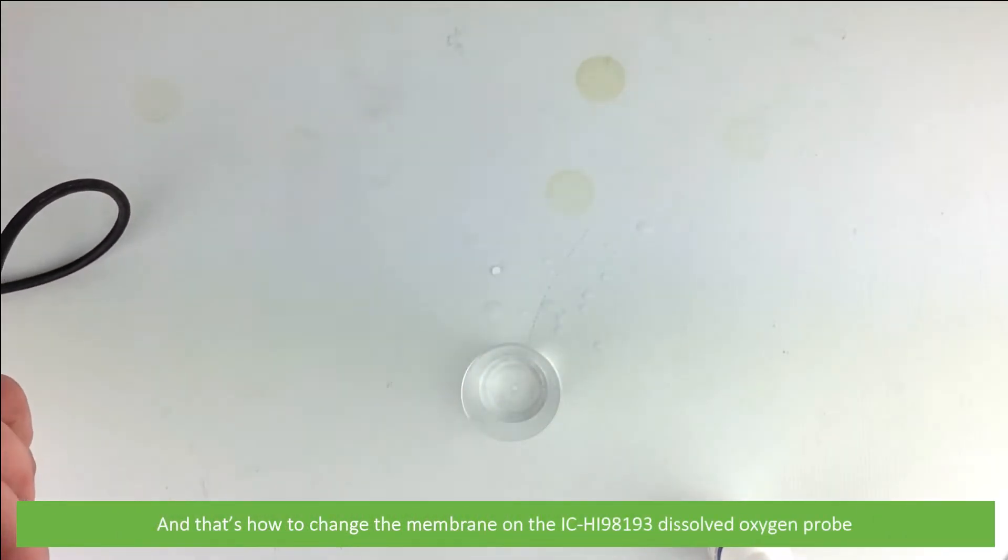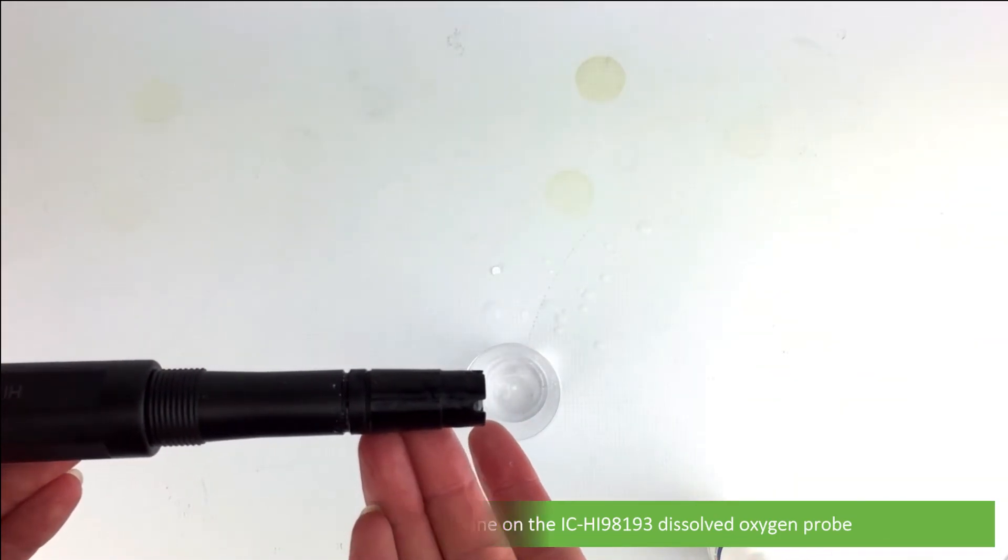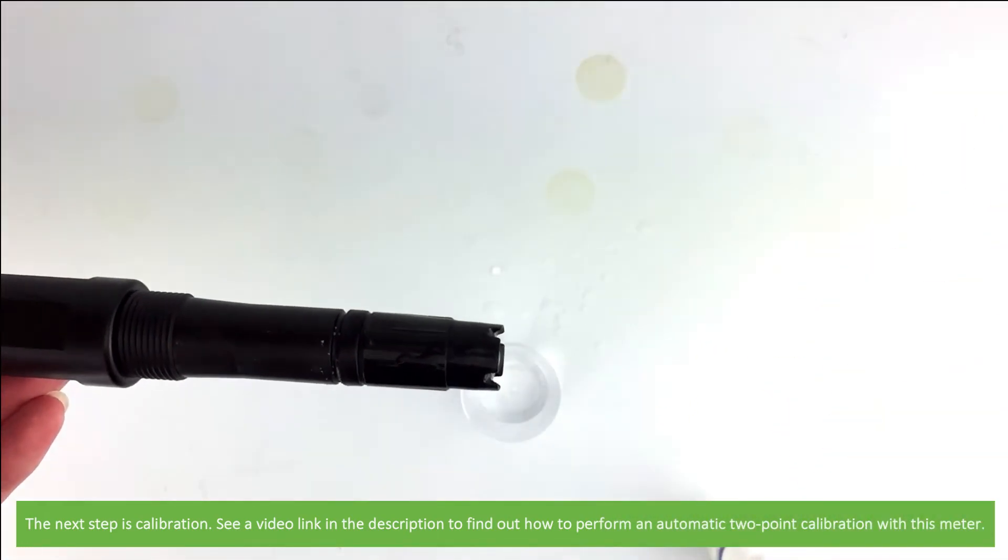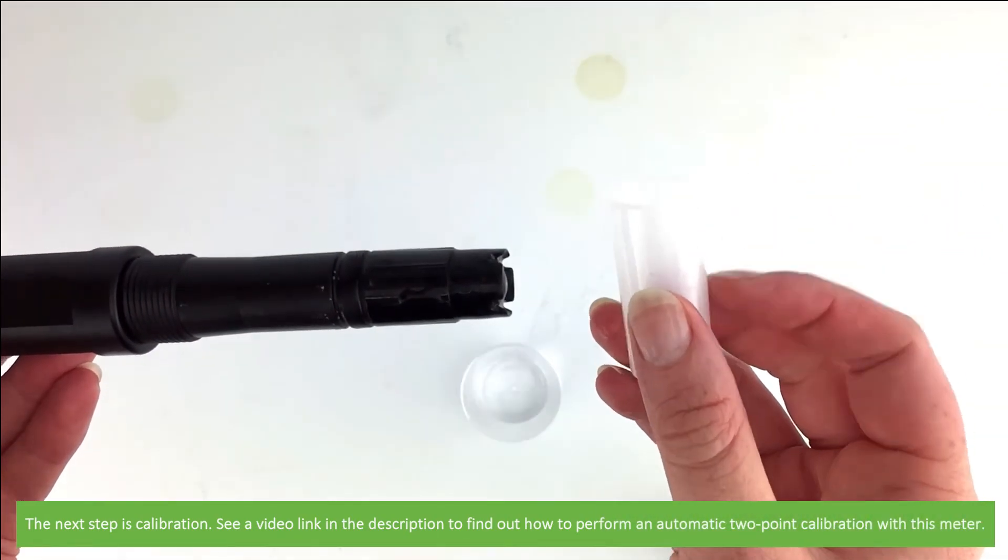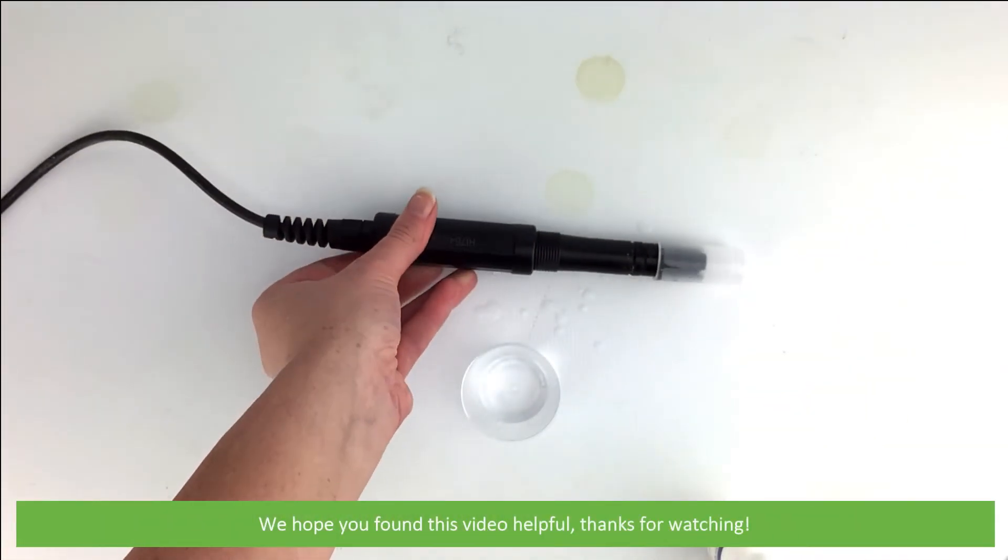And that's how to change the membrane on the IC HI-98193 dissolved oxygen probe. The next step is calibration. See a video link in the description to find out how to perform a two-point automatic calibration with this meter. We hope you found this video helpful. Thanks for watching!